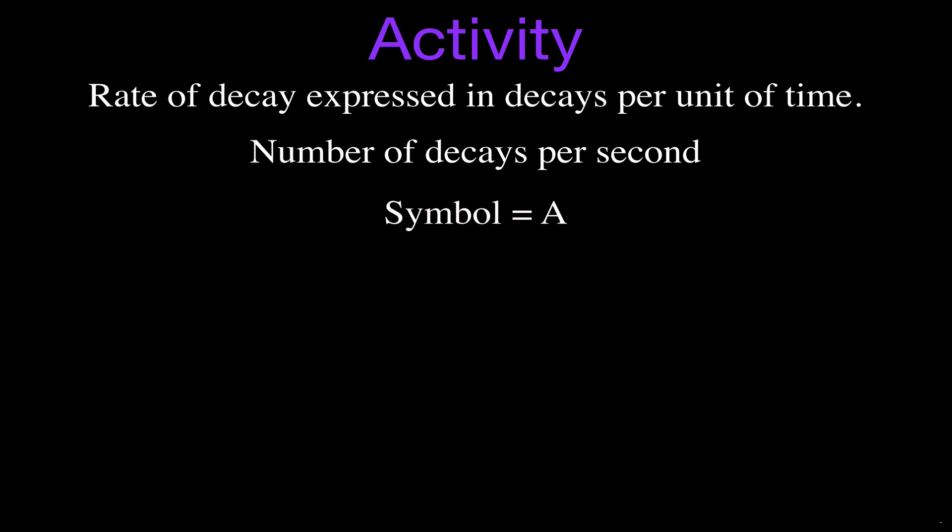The symbol for activity is simply the capital A. Sometimes you'll see people use a capital R, but in this video we'll use capital A for activity. The unit is the Becquerel, abbreviated with a capital B and a lowercase Q. Becquerel was named after Henri Becquerel, who along with Marie and Pierre Curie won the Nobel Prize in 1903 for their work on radioactivity.